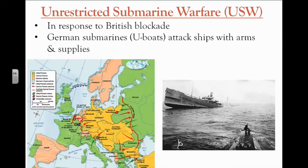In unrestricted submarine warfare, German U-boats would attack any ship — merchant or war vessel — in the war zone that carried necessary arms or supplies, without warning. This included ships from neutral nations, like the United States, as well as allied nations' ships.